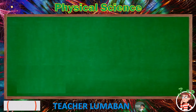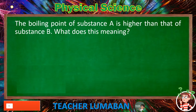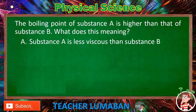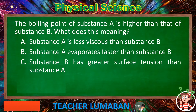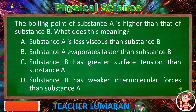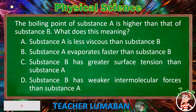The boiling point of substance A is higher than that of substance B. What does this mean? Letter A: Substance A is less viscous than substance B. Letter B: Substance A evaporates faster than substance B. Letter C: Substance B has greater surface tension than substance A. Letter D: Substance B has weaker intermolecular forces than substance A. Choose the suitable answer in 5 seconds.